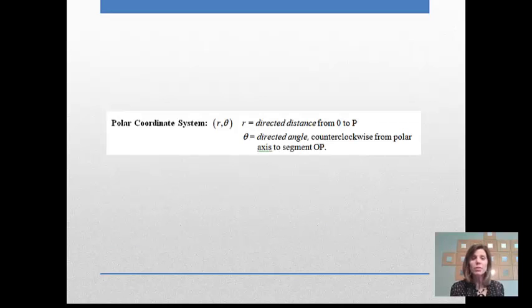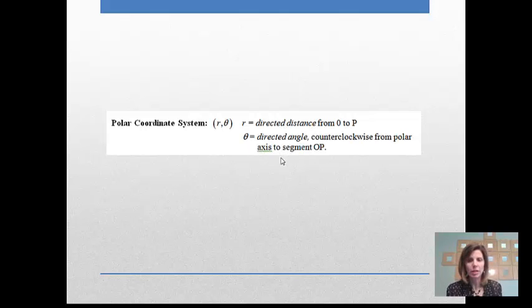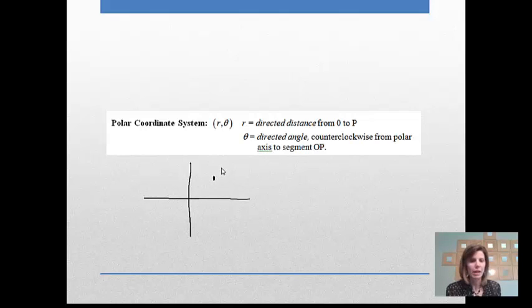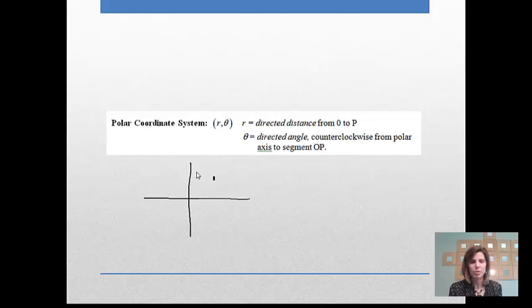Before you can convert, we need to know what a polar graph looks like and what the coordinates are. In the polar coordinate system, R theta means R is the directed distance from O to P, and theta is a directed angle counterclockwise from the polar axis to segment OP. The polar coordinate system is just another way of describing a point, just as parametric equations were another way of describing a point.